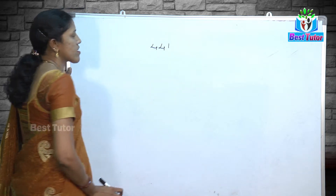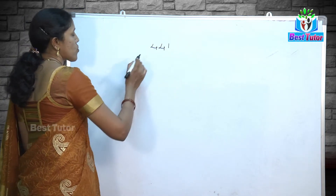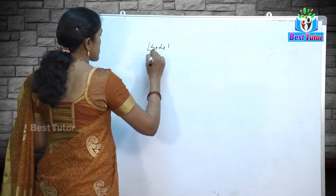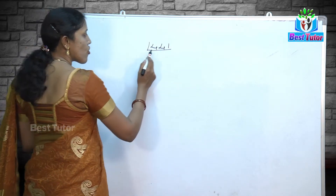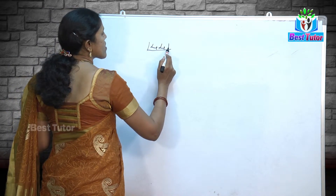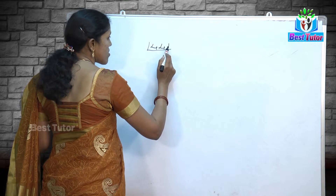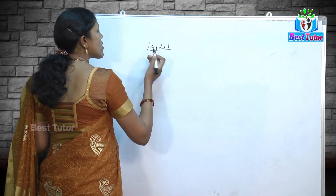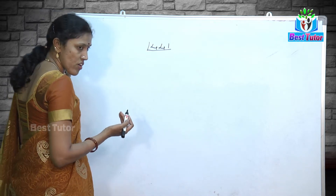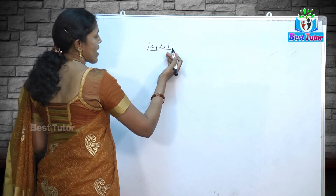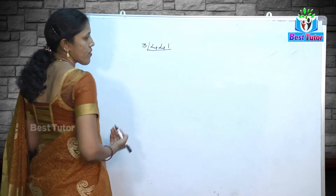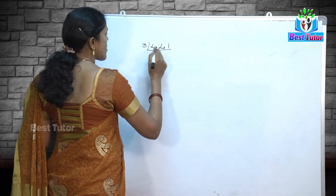Let us consider the example 441. We need to find the square root of 441 using the prime factorization method. Is 441 divisible by 2? No, because it ends with the digit 1 in its units place. Is it divisible by 3? Using the divisibility test: 4 plus 4 is 8, and 8 plus 1 is 9. Since 9 is divisible by 3, yes, 441 is divisible by 3. So 3 into 147 equals 441.